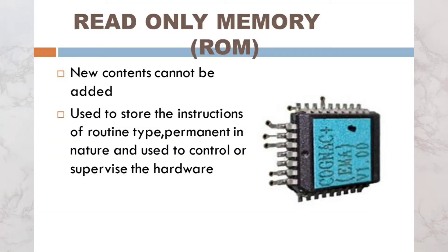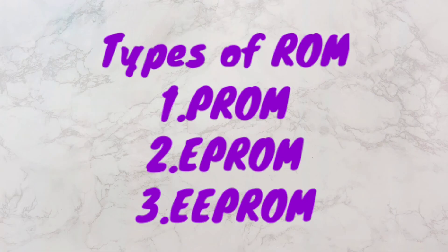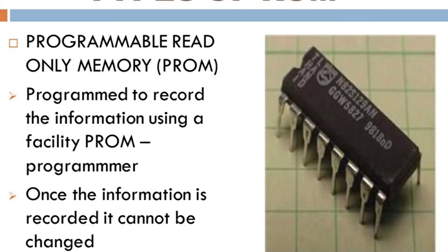As per the previous tutorial, the whole introduction of Read-Only Memory is available in that part, so you can check it out. Now we will discuss the types of ROM available — that is the three types: PROM, EPROM, and EEPROM.